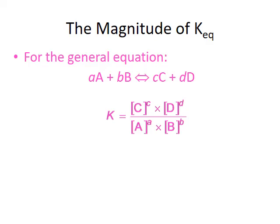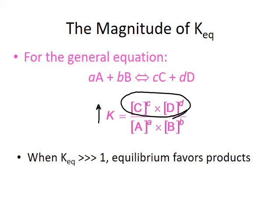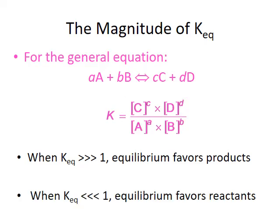The value of the equilibrium constant can give us important information about the balance between forward and reverse processes in our reaction. When the equilibrium constant is really large — much greater than 1 — that indicates large product concentrations compared to reactant concentrations, and we say equilibrium favors our products. On the other hand, when the equilibrium constant is really small — much less than 1 — our reactant concentrations are much larger than the numerator, and we say that equilibrium favors the reactants.